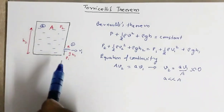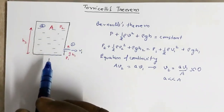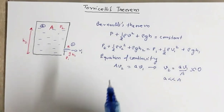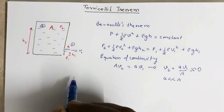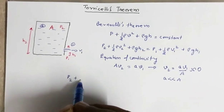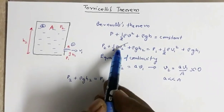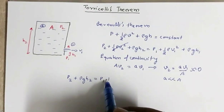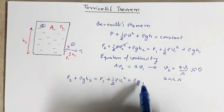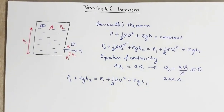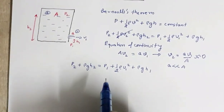So the velocity of the top surface, when the water is coming out through the opening with velocity v1, the top surface will appear to be stationary. V2 is zero, so that term is gone. Now let us reduce this expression and find the value of v1.